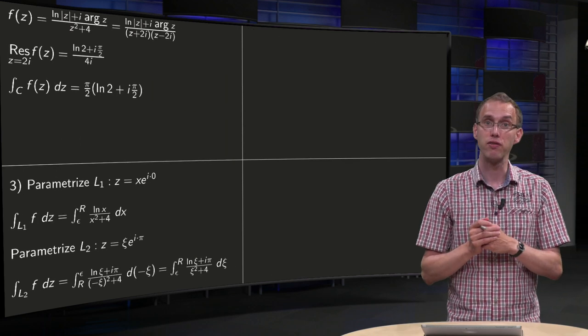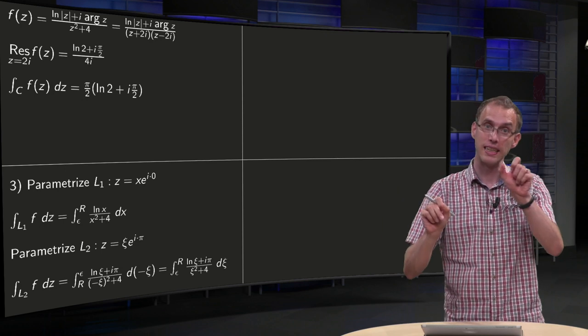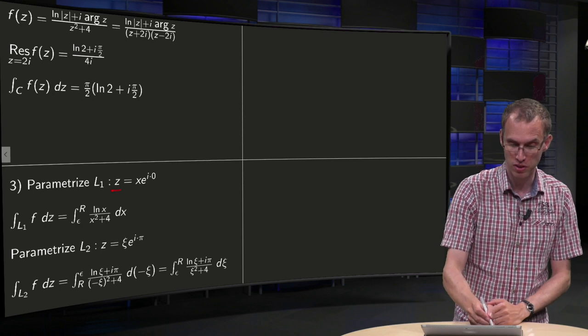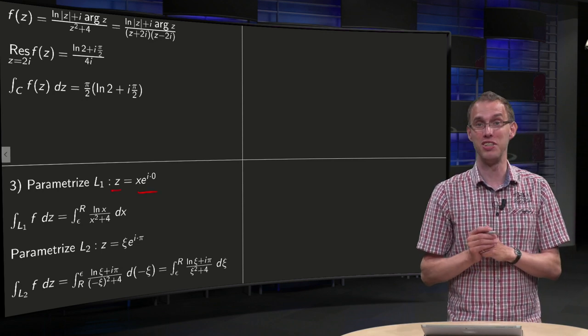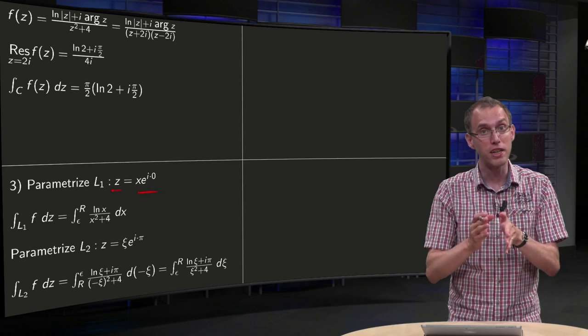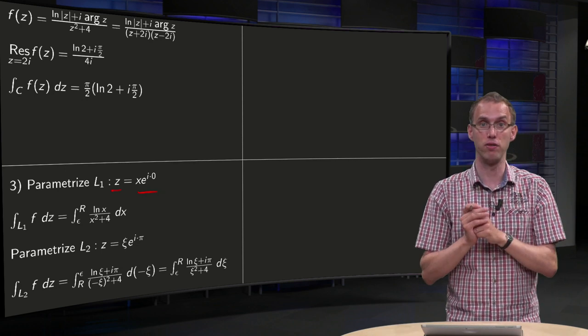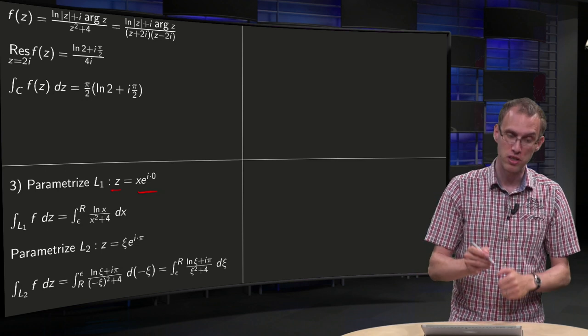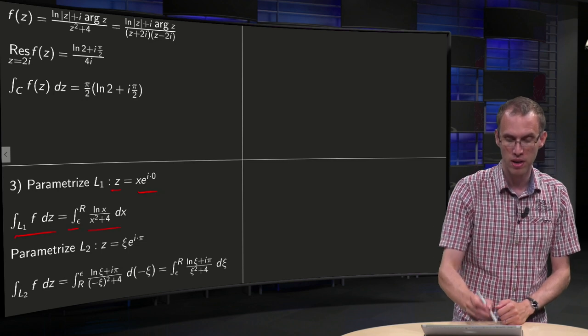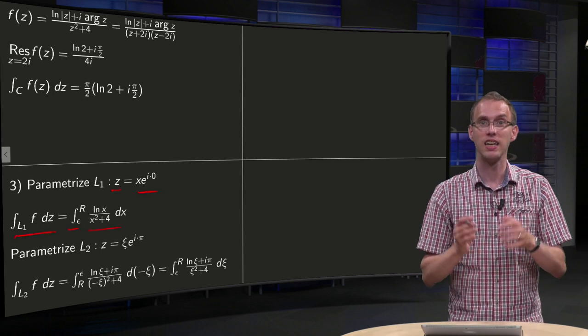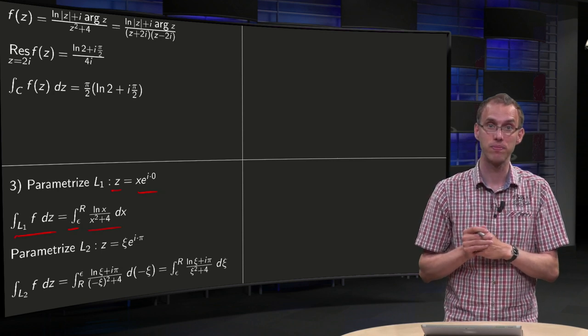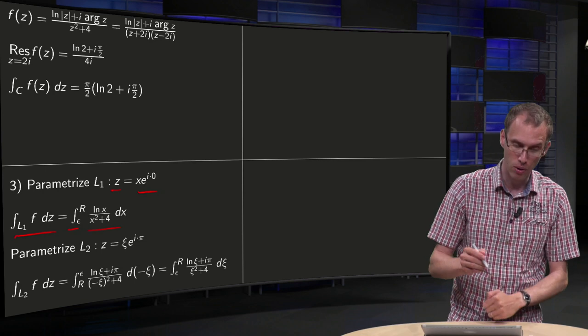Then step 3. I have to parameterize L1 and L2. Well, parameterizing L1 is easy, you can just take z equals x times e to the power i times 0. The argument here is 0, because our arguments are between minus pi over 2 and 3 pi over 2. So that means your integral along L1 of f dz is just the integral from epsilon to R, ln x over x squared plus 4 dx. And that's nice, because that's the integral we are eventually interested in.